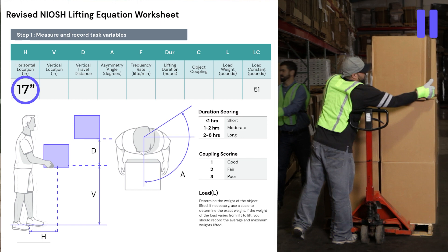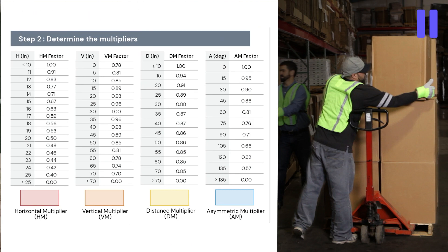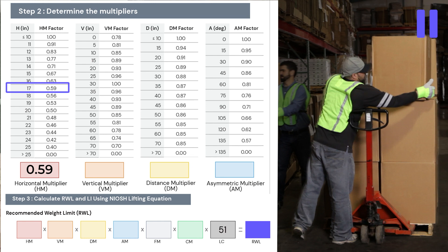Remember the three-step process. We plug the 17 inch horizontal reach field measurement into the horizontal conversion table. We pluck the horizontal multiplier from the horizontal conversion table, and we plug the horizontal multiplier, in this case 0.59, into the equation.